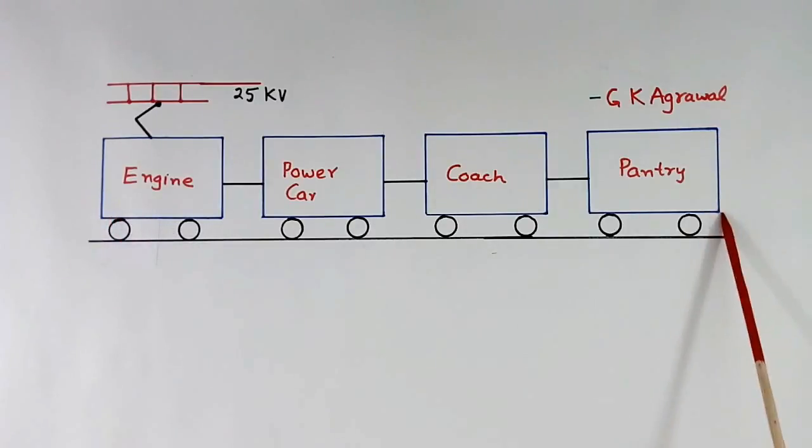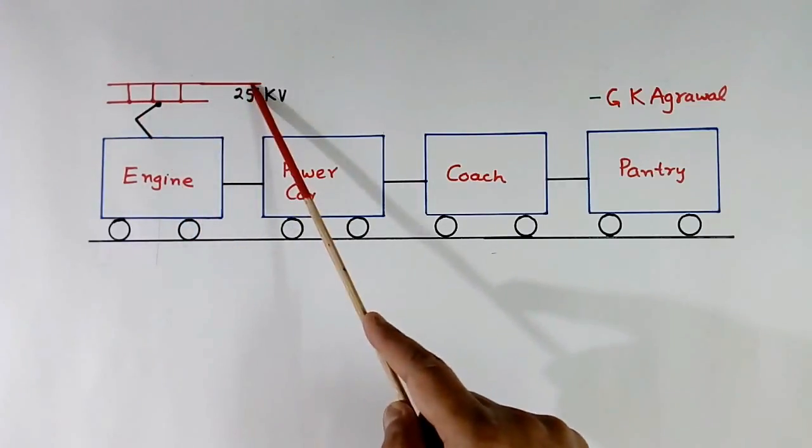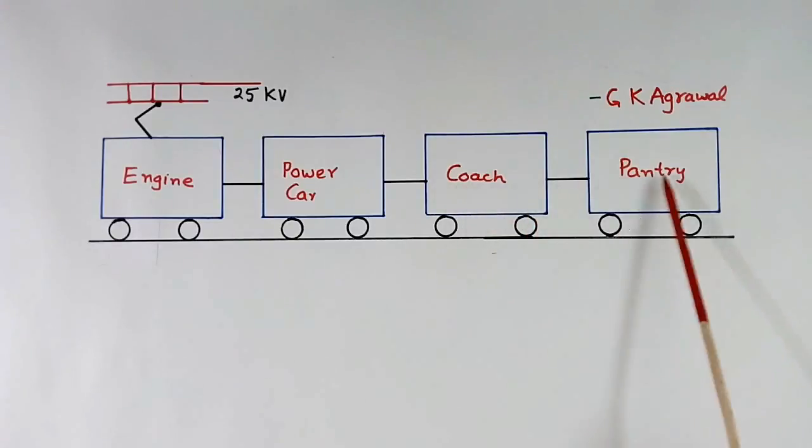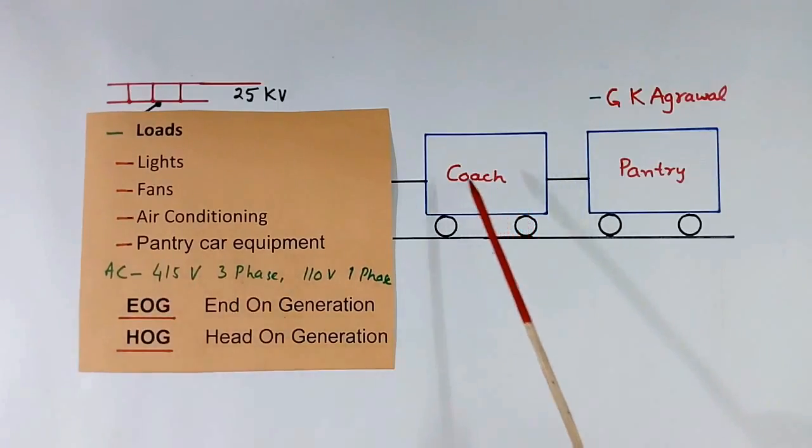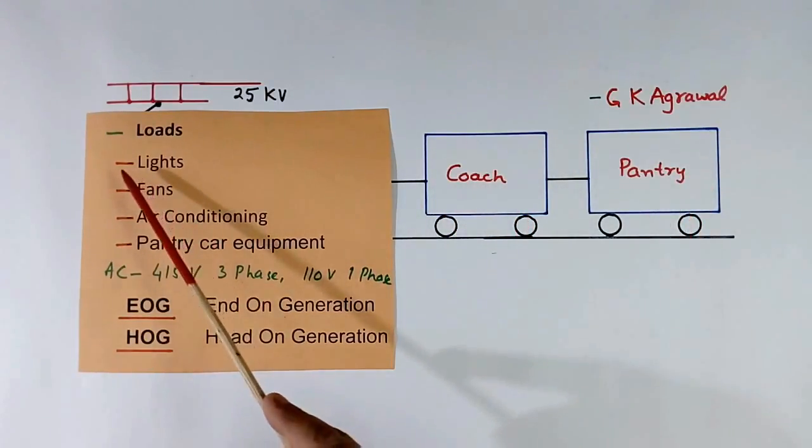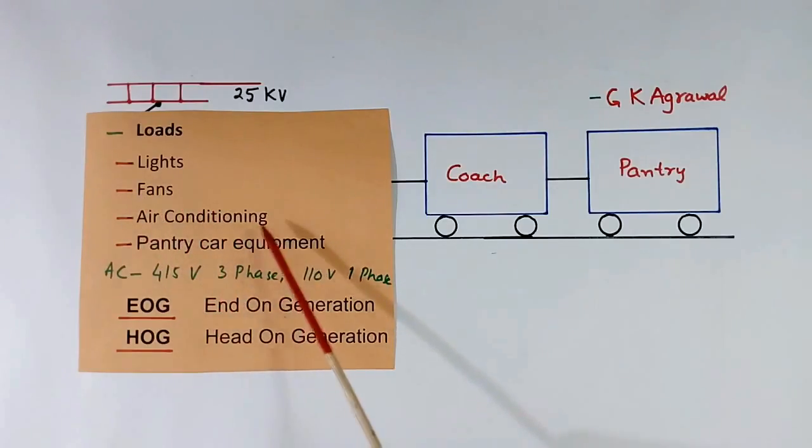Now this train has two kinds of loads. One is engine which gets power from overhead line, and another load is coach and pantry car. Loads in coach and pantry car are lights load, fans load, air conditioning load, pantry car equipment. In these loads, some loads require AC 415 volt 3 phase, and some loads require 110 volt 1 phase AC. Today we will discuss from where the supply comes for these loads to run.